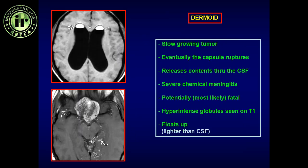On CT it is a low-attenuation, fat-density, lobulated mass with rim or chunky calcification. On MRI it is variable — predominantly T1 hyperintense with a fluid-fluid level due to cholesterol content, whereas on T2 it is very variable. The important thing is that this lesion grows because of constant secretion from the sebaceous and sweat glands, causing a progressive increase in mass effect.